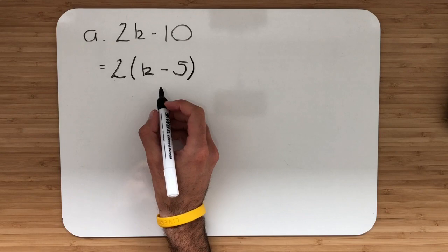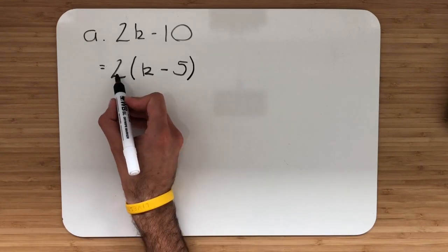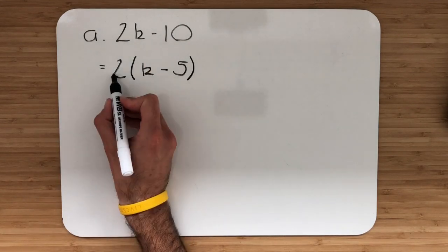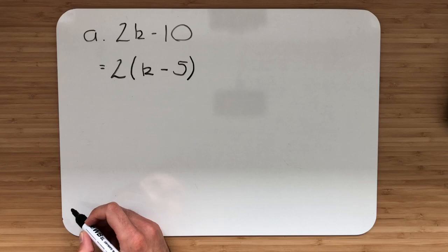What I would always recommend doing here is just double checking. Let's break it out in our heads: 2 multiplied by k, 2k; 2 multiplied by negative 5, negative 10. Perfect.